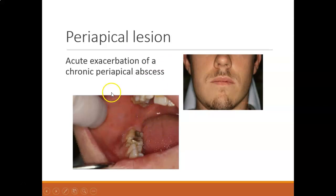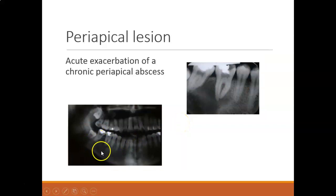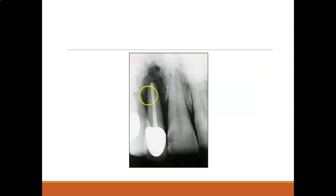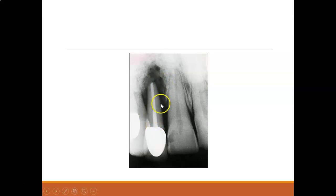Here is a periapical lesion that has really acute exacerbation of a chronic periapical abscess, and it's caused a lot of swelling — you can see all the swelling on the side of the cheek. The panoramic radiograph shows a large lesion. Sometimes after endodontic therapy, the bone does not fill in or the infection can be recurrent — the root canal failed and the bone may have re-resorbed, perhaps because they missed an accessory canal, so it needs to be retreated.